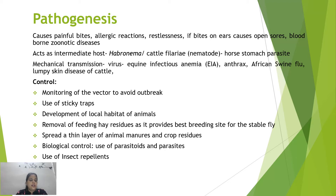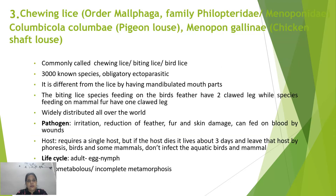Control measures for stable flies include proper monitoring to avoid outbreaks, use of sticky traps to catch adults, development of local animal habitats, removal of feeding hay residues which provide breeding sites, biological control using parasitoids and parasites, and use of insect repellents.